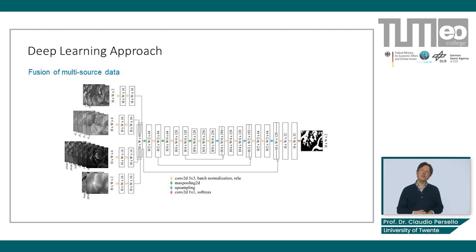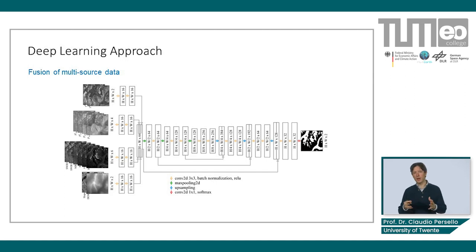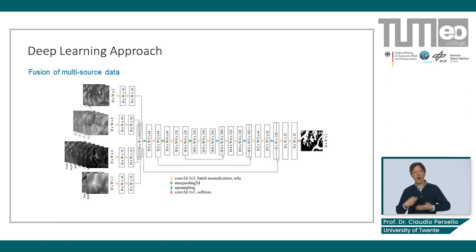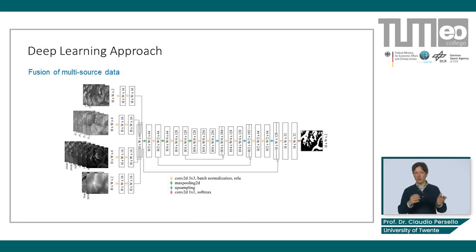We designed a convolutional network with an encoder-decoder type of structure to perform pixel-wise classification. The network was also designed to perform an early fusion of the multisource input geospatial data. The output of the network is a binary map distinguishing glaciers from the rest.